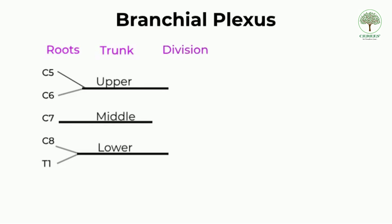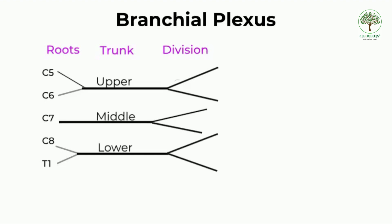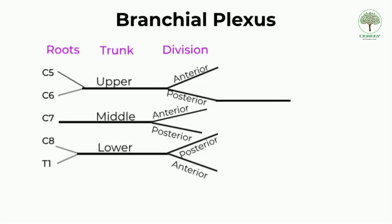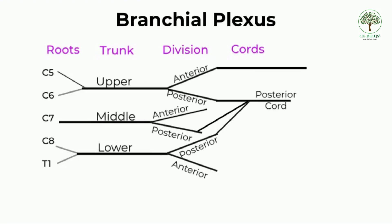Just behind the clavicle, these trunks give off divisions — anterior and posterior divisions from each of the upper, middle, and lower trunks. The terms anterior and posterior refer to the humerus bone of the upper limb. The posterior divisions of all three trunks unite to form the posterior cord. The anterior divisions of the upper and middle trunks unite to form the lateral cord, and the anterior division of the lower trunk continues as the medial cord.